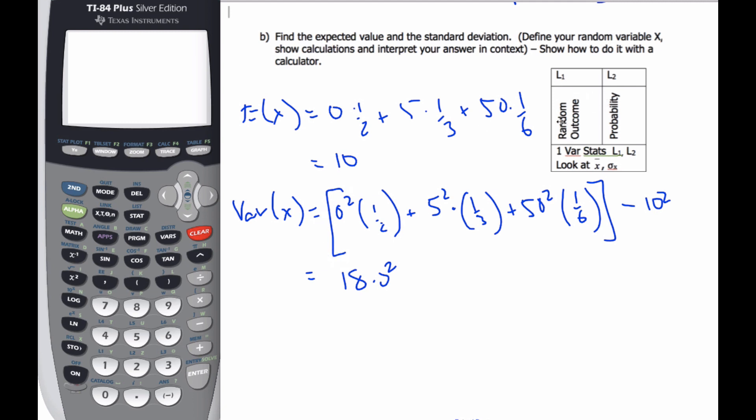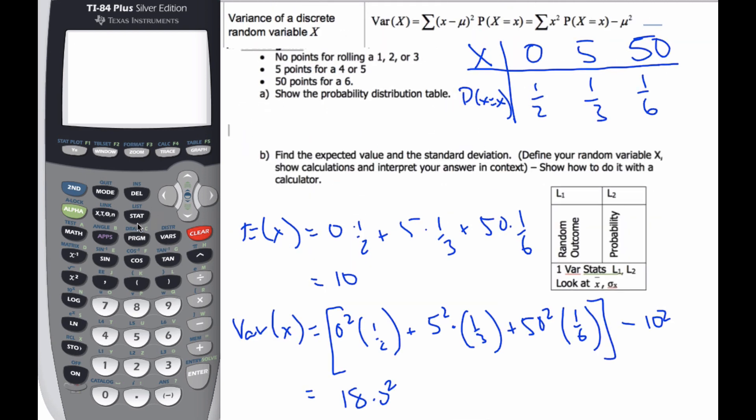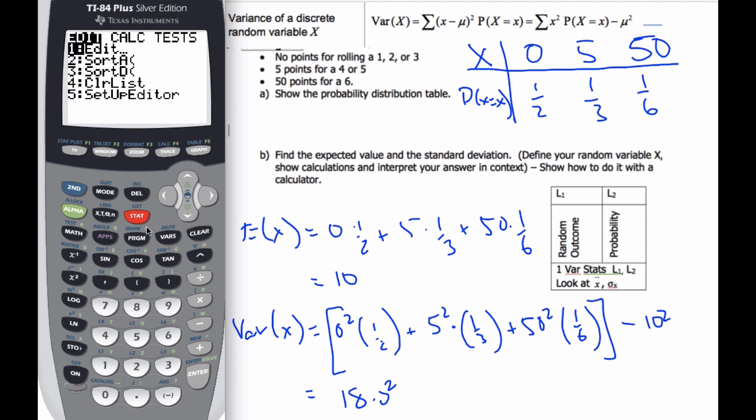All right. So I can do this in my calculator and it's really handy. Our calculator for the option, we always get the calculator. So you need to know how to use it. And so to use my calculator, I'm going to go to STAT and I'm going to go EDIT and in L1, I put the numbers, my outcomes. And in L2, I put the probability, as you can see, I've already done it.